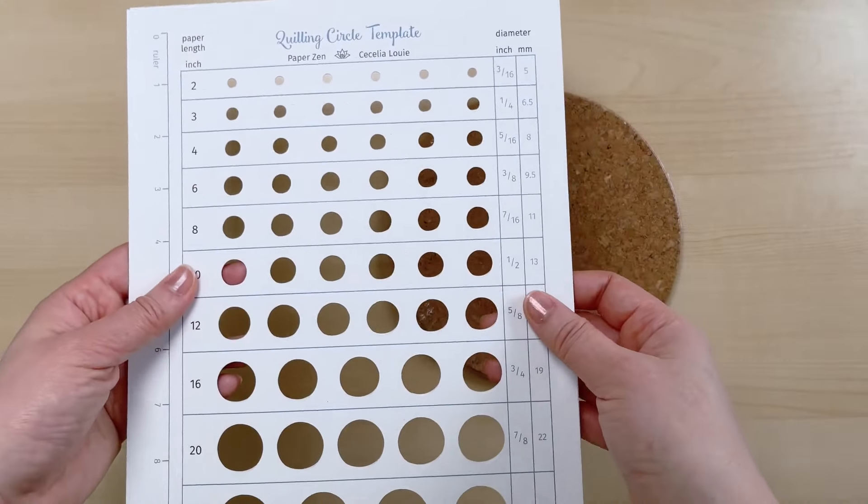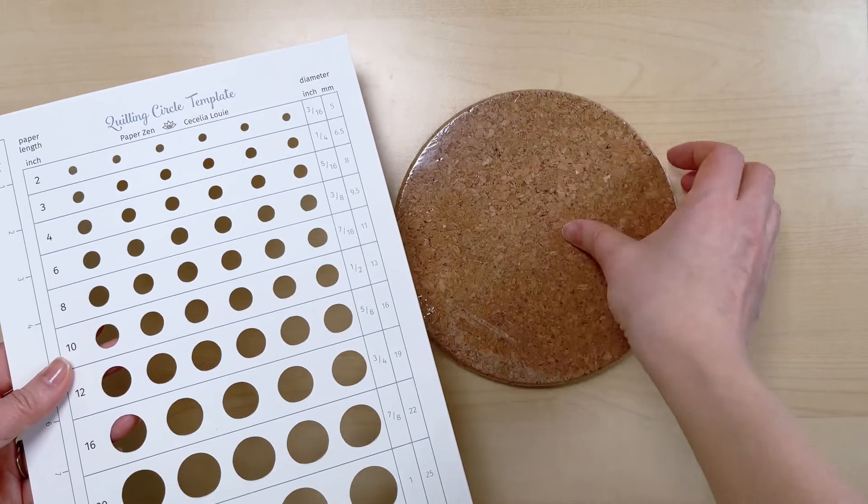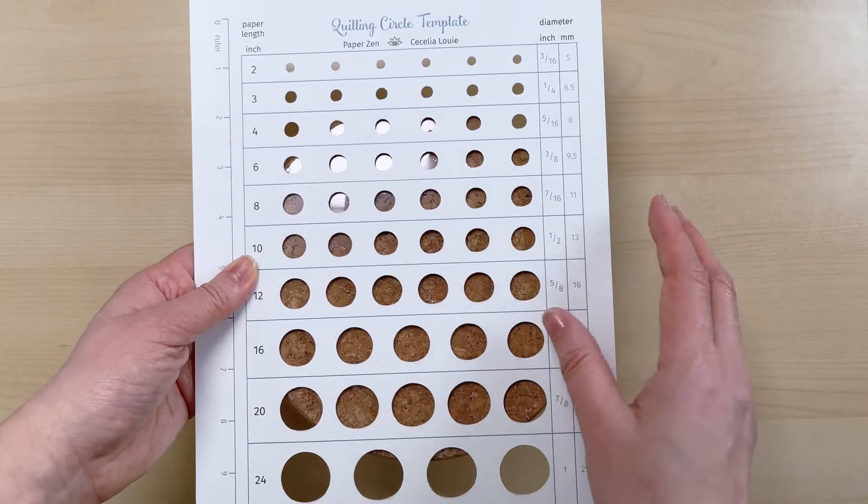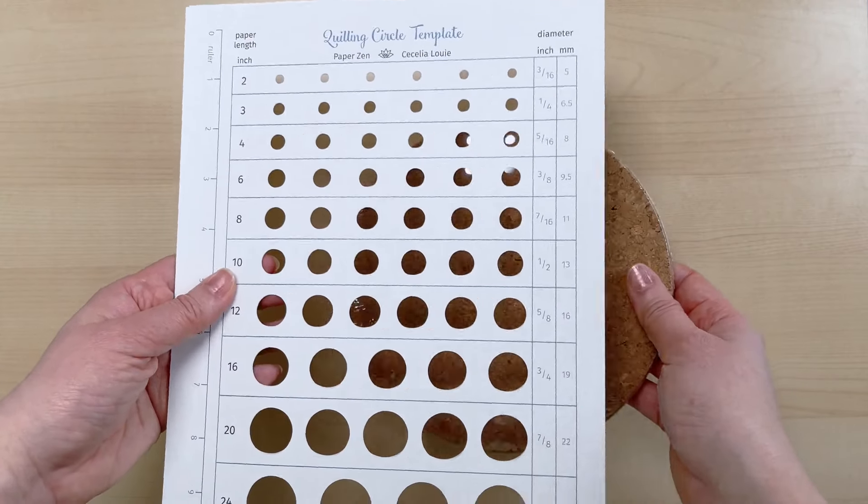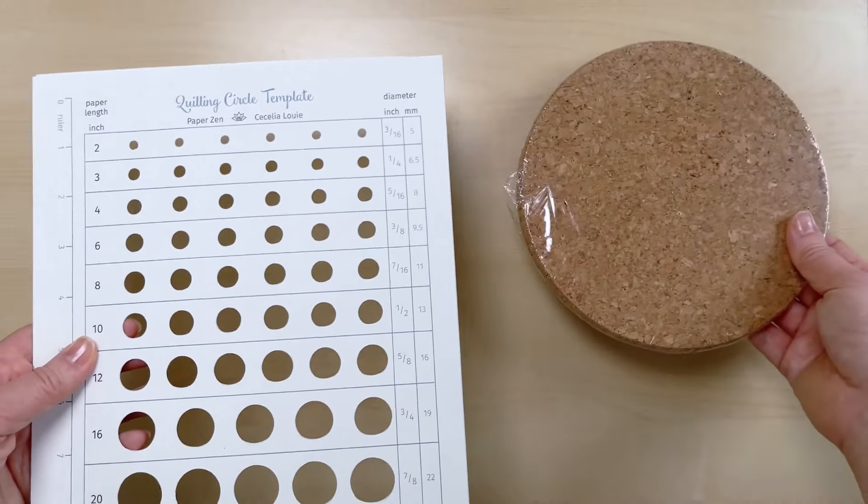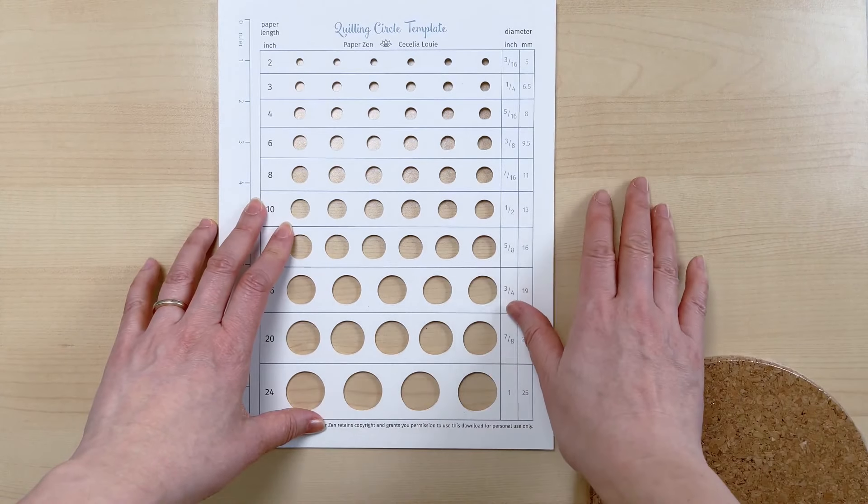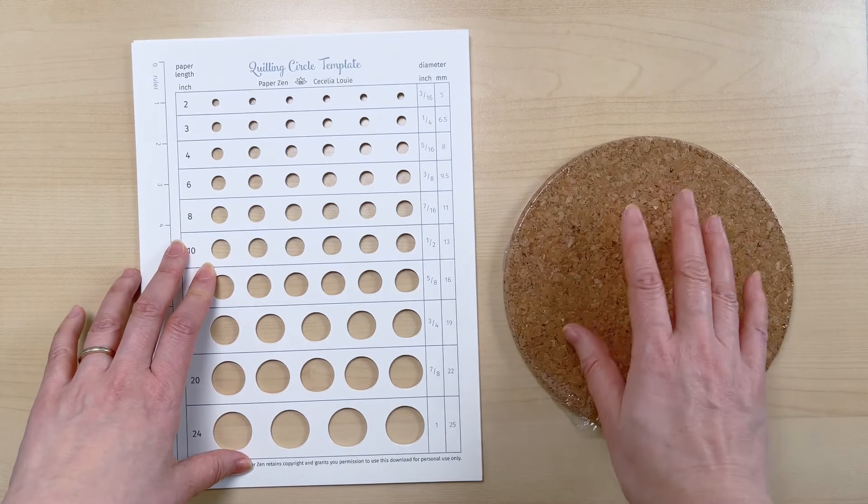After you've let your template dry overnight you can choose to glue that to a cork board if you want to have a permanent kind of solution. As for myself to be honest with you I actually prefer sometimes to use this with and without the cork. So sometimes I just actually prefer to use my table surface as the backdrop for this rather than the cork itself.